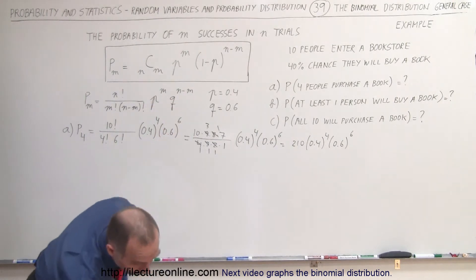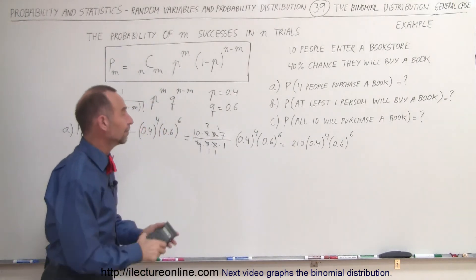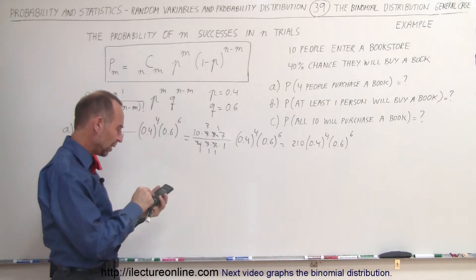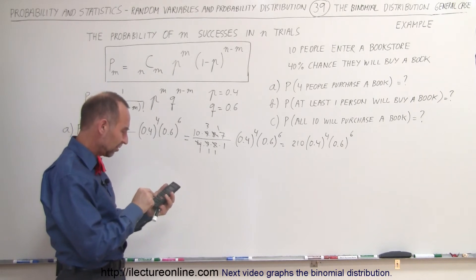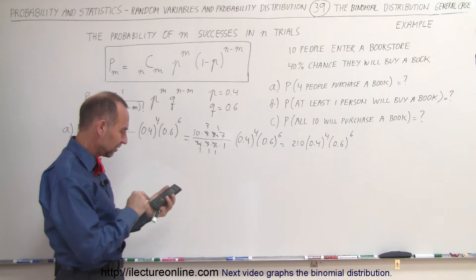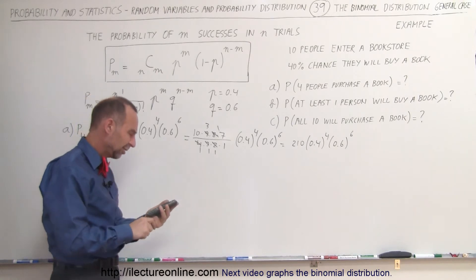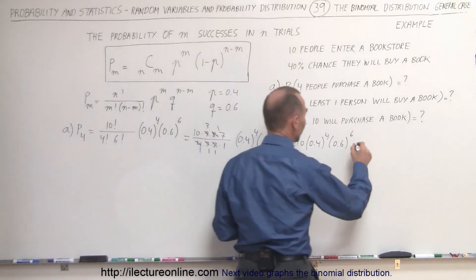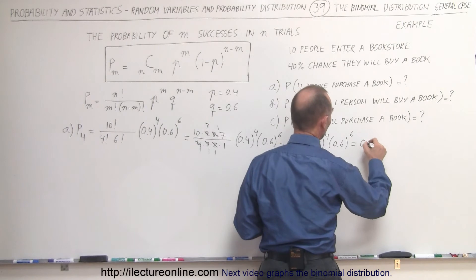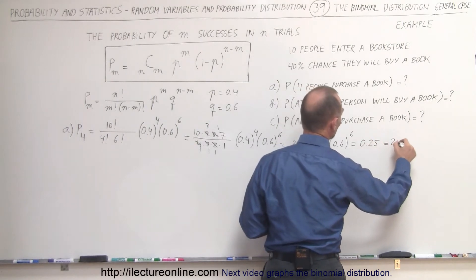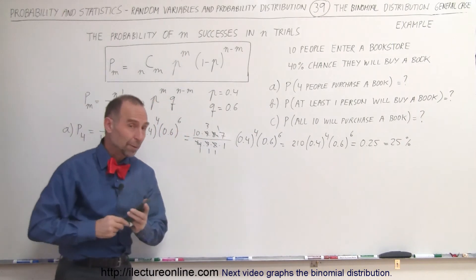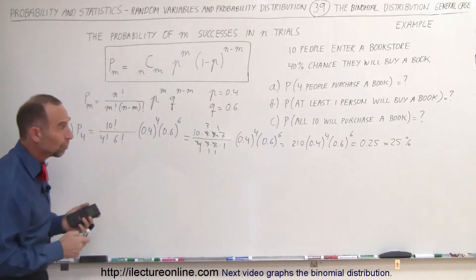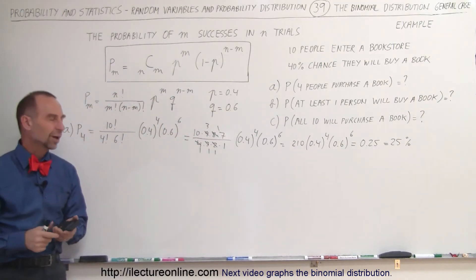At this point you'll want to use a calculator. Computing 0.4 to the 4th power times 0.6 to the 6th power, then multiplying by 210, we get 0.25 — which is equal to 25%. So the probability that 4 people will purchase a book is about 25%, or 1 out of 4.